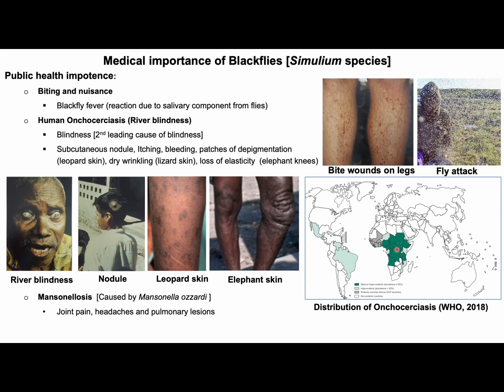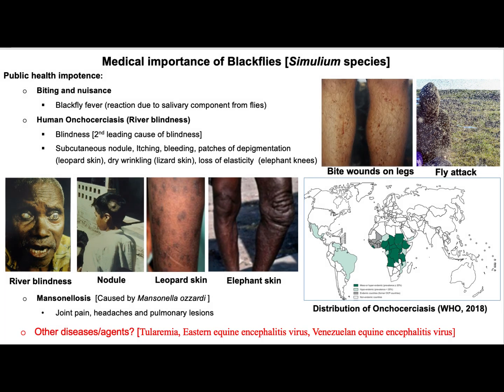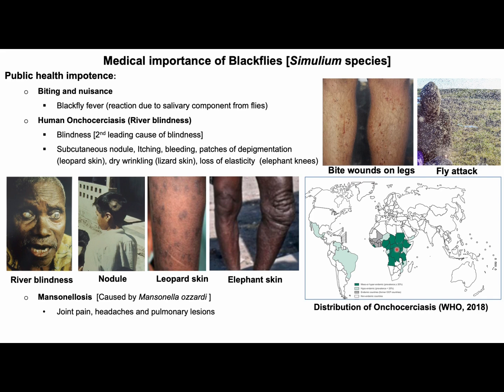In some countries the disease has been eliminated or an elimination program is ongoing. More than 90% of infected people live in 31 African countries, and it is the second most common cause of human blindness after trachoma. Moreover, subcutaneous nodule formation, patches of depigmented skin known as leopard skin, dry wrinkled skin similar to lizard skin, and loss of elasticity of skin resembling elephant knees are also seen in onchocerciasis.